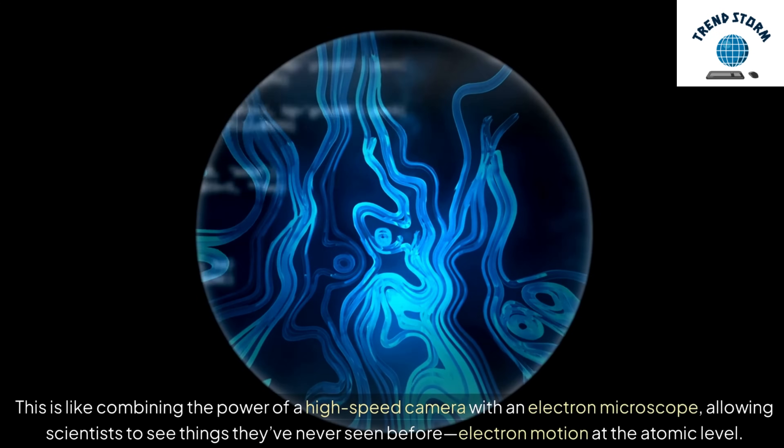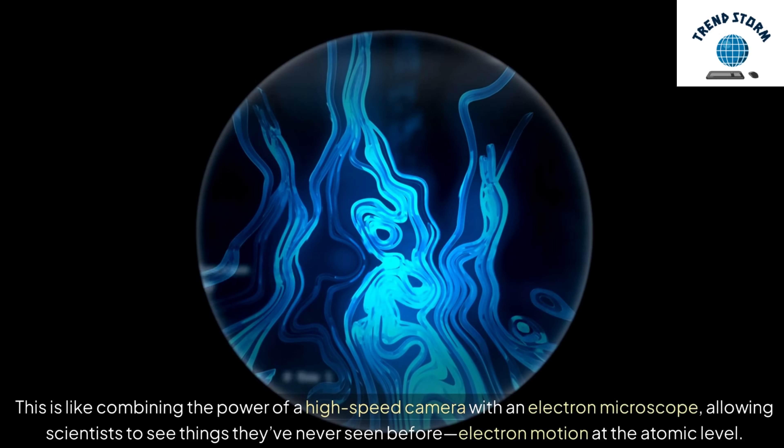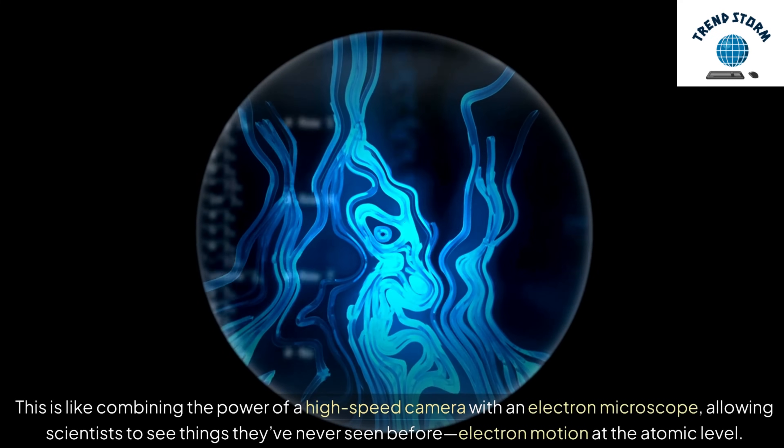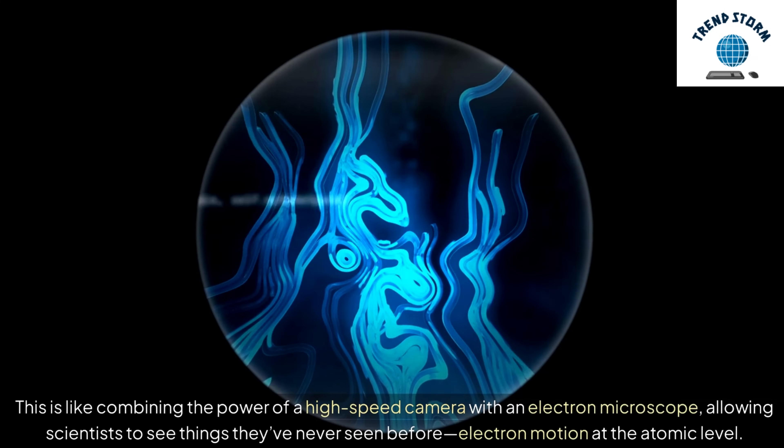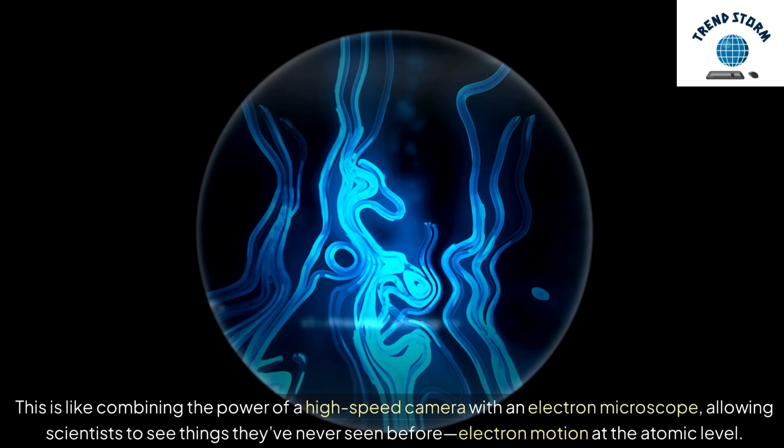This is like combining the power of a high-speed camera with an electron microscope, allowing scientists to see things they've never seen before: electron motion at the atomic level.